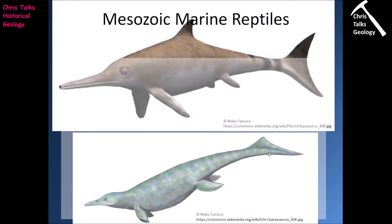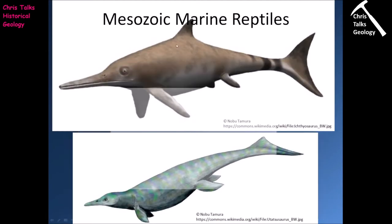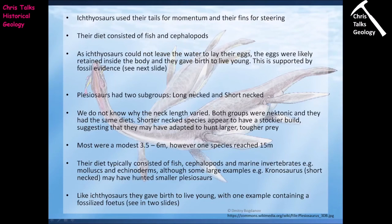We can see this is the reptilian tail, but we can see the start of the formation of the upper fluke of the tail. This is essentially the early stages of ichthyosaur evolution, with this being a more advanced ichthyosaur. The ichthyosaurs use their tail for momentum and their fins for steering, just like a modern-day shark.